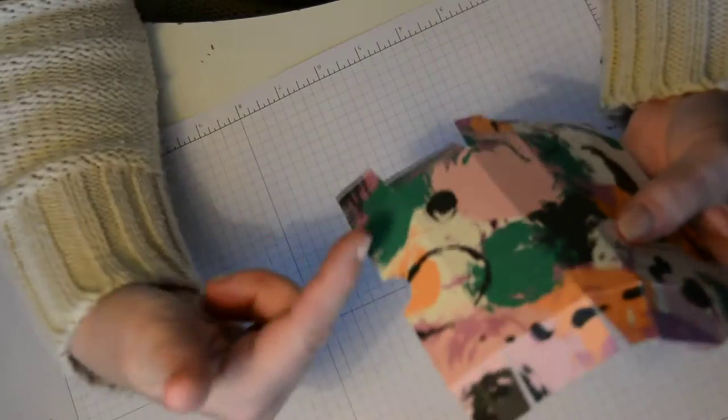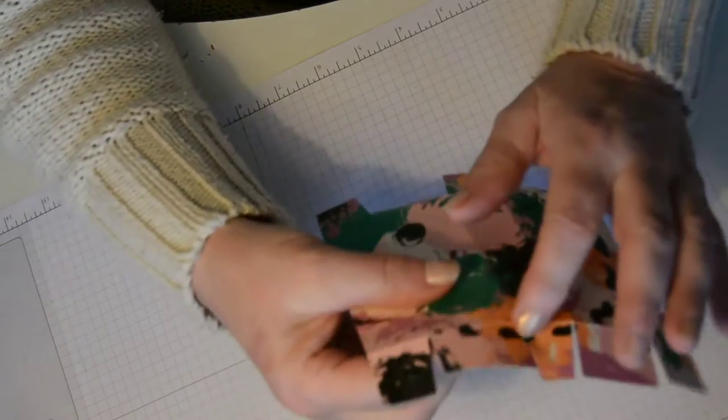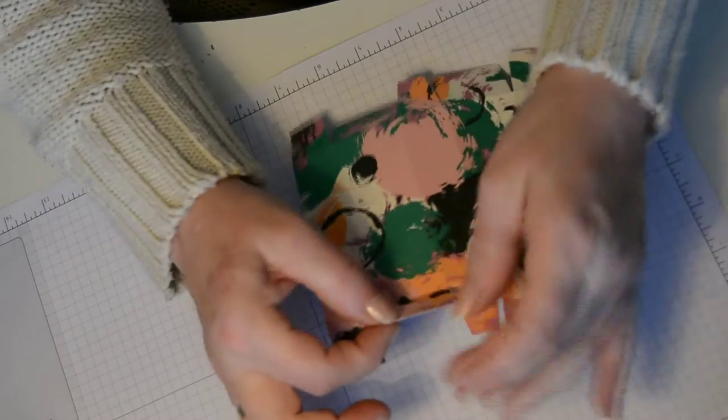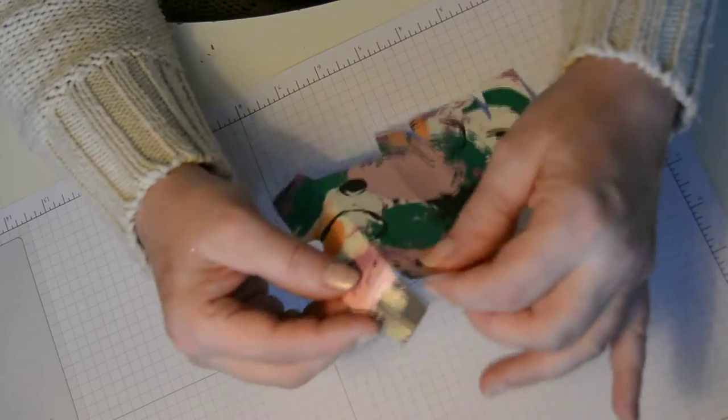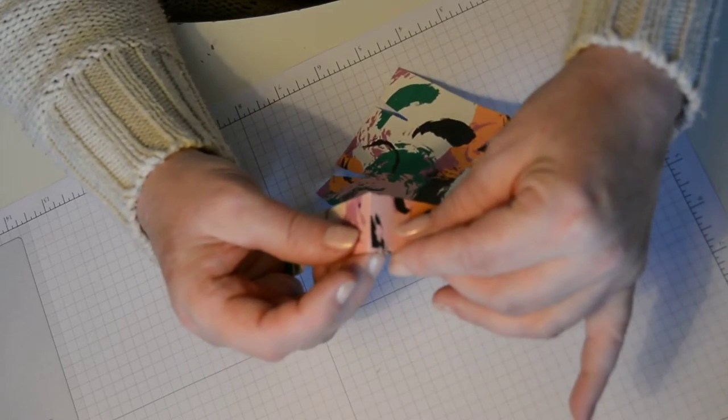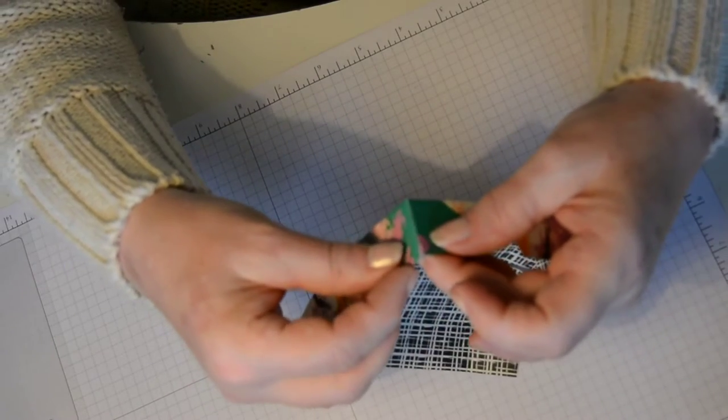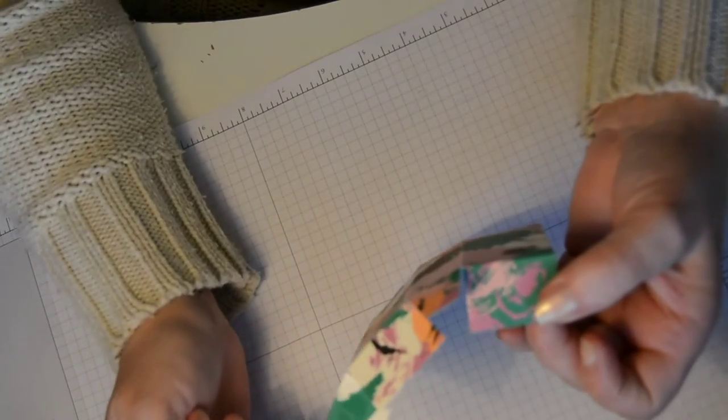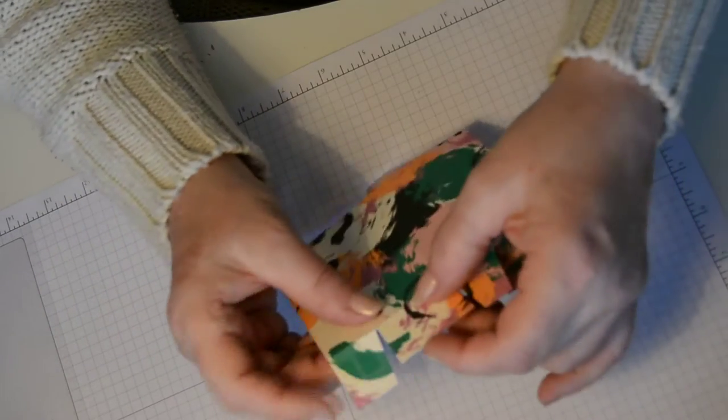So now we're going to construct the box. Now as this is the lid, you only want to put one flap inside your rectangle. So we'll build the lid first. Pop that on there, and that one on there.